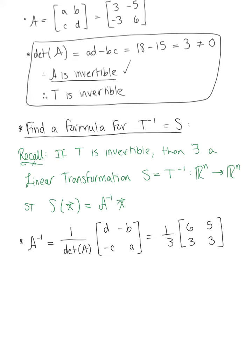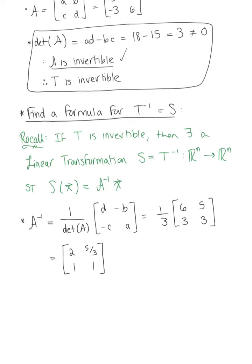And now if we distribute our scalar multiple 1/3 through the matrix, we are left with 6 by 3 is 2, 5/3, and then 3 divided by 3 is just 1. All right. So here is our inverse matrix.